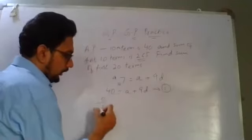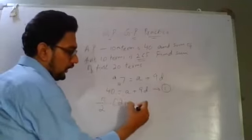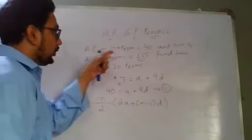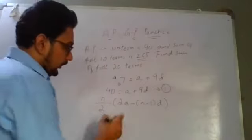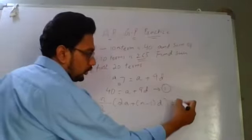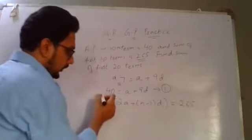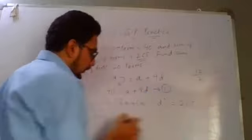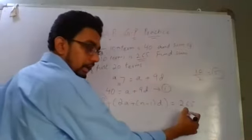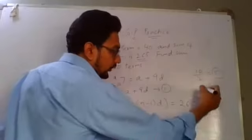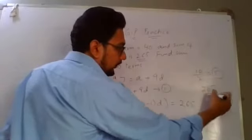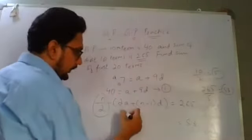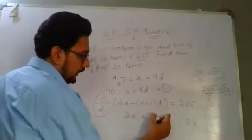The formula for sum is N over 2, 2A plus N minus 1 into D. Now what is N over 2? N is 10, so 10 over 2 is equal to 265. N over 2 is 10 over 2, equals 5. So I am taking this 5 over here downwards. So this becomes 265 divided by 5, that is coming 53.